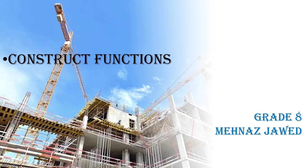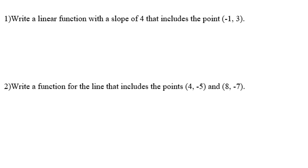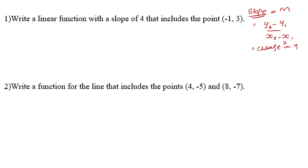Today we are going to study how to construct linear functions. Slope means m, and the formula of m is y2 minus y1 over x2 minus x1. What is y2 minus y1? It is change in y. And what is x2 minus x1? That is change in x. This gives you slope. The equation of the linear line or linear function is y equals mx plus b.